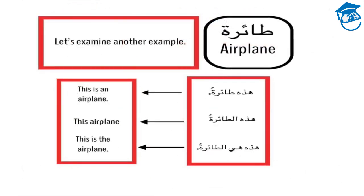Let's look at another example. This time we'll use Ta'ira, which means 'airplane.' Hathihi Ta'iratun means 'this is an airplane.' Hathihi a-Ta'iratu means 'this airplane.' And Hathihi Hia a-Ta'iratu means 'this is the airplane.'